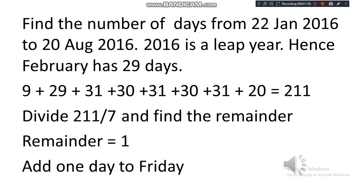The remaining days of January: 9 days. Plus February 2016: 29 days. 9 plus 29 plus March 31 days, plus April 30 days, plus May 31 days, plus June 30 days, plus July 31 days, plus August 20 days. Adding all of these gives a total of 211.